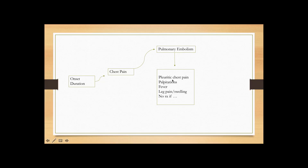The pain in PE is going to be pleuritic chest pain, meaning it's worse with deep inspiration — the patient will take a deep breath in and that's when the chest pain gets really worse. In addition, they may report palpitations, which usually happens if they have developed tachycardia because of the PE.